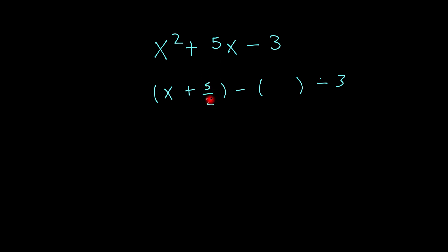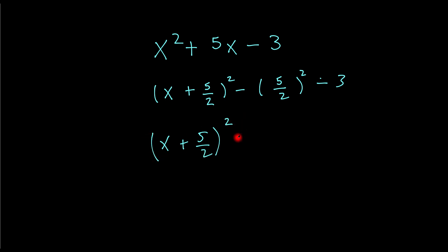In other words, divide it by 2. That's what we do here, and we square them. Then you get x plus 5 over 2 all squared. Now if I square this, I get 25 over 4 minus 3.